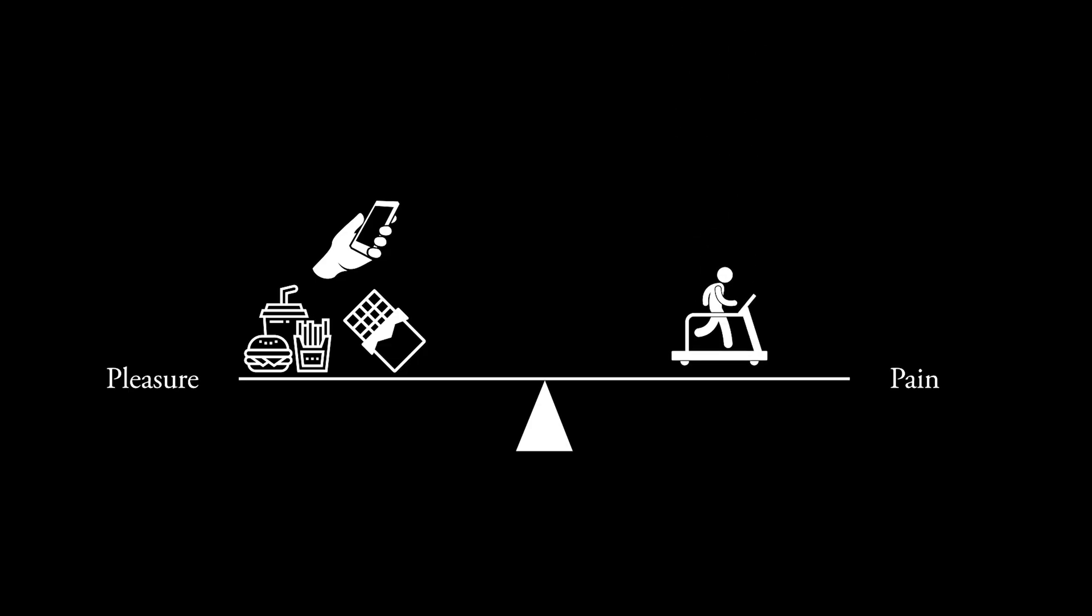Imagine a scale with pleasure on the left side and pain on the right side. On the pleasure side, you've got things like fast food, scrolling, or candy, anything that spikes your dopamine. On the pain side, you've got things like working out, taking a cold shower, or tackling a hard project, anything that feels uncomfortable in the moment.